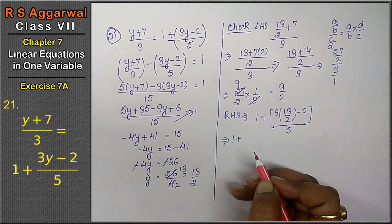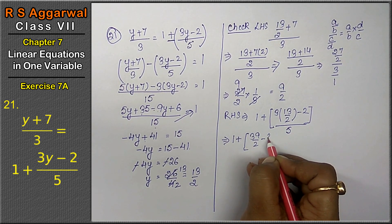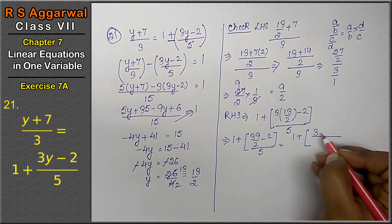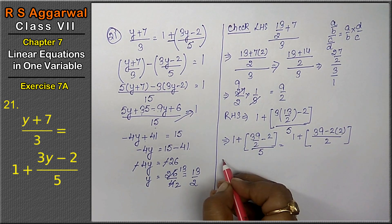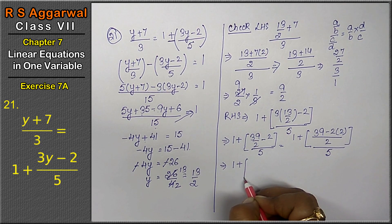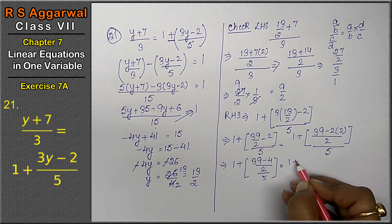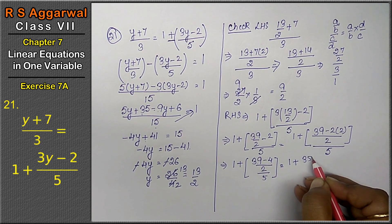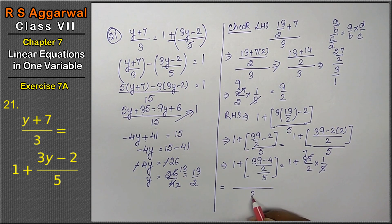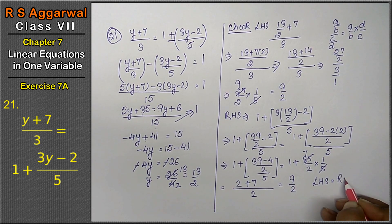Right hand side: 1 plus (3 into 13 upon 2, minus 2) upon 5. The numerator: 39 upon 2 minus 2 gives (39 minus 4) upon 2, which is 35 upon 2. So 1 plus 35 upon 2 upon 5, giving 1 plus 35 upon 10, which is 1 plus 7 upon 2. LCM gives (2 plus 7) upon 2, equals 9 upon 2. Left hand side equals right hand side.